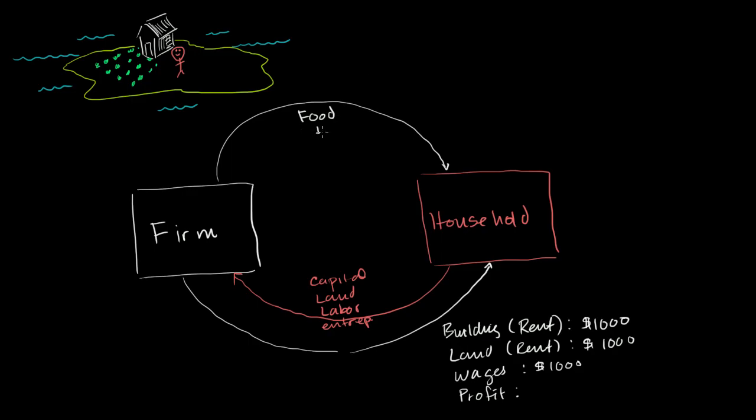So he's getting food and shelter, and in exchange for the food and the shelter, he's going to pay the firm. He decides there isn't much of a market right over here, he is the market. But let's say for the food, he pays $2,300 a year for the food. And for the use of the building that the firm is renting, he is paying rent of $1,200.